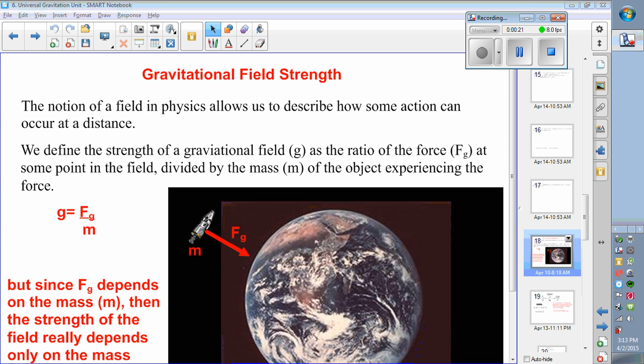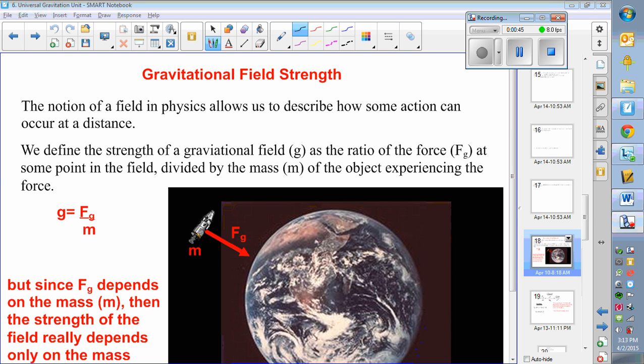When we talk about gravitational field strength, we want to really understand fields in general in physics. We're talking about action at a distance. A magnetic field can cause a force to arise at some place far away from it. A gravitational field can also cause an impact somewhere in the gravitational field.